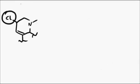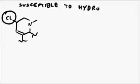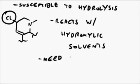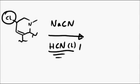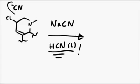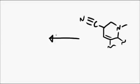This chloro compound needs the chlorine replaced with a carbon atom to give the acid group, but it was found to be very susceptible to hydrolysis. The only way it turned out to be possible was to use sodium cyanide in liquid hydrogen cyanide as a solvent, which is pretty scary, but it worked and the nitrile group is added.